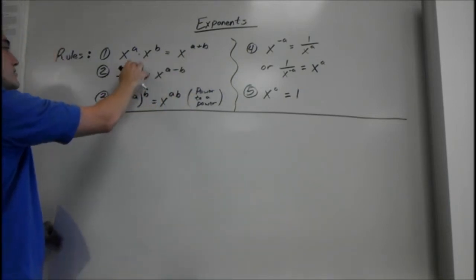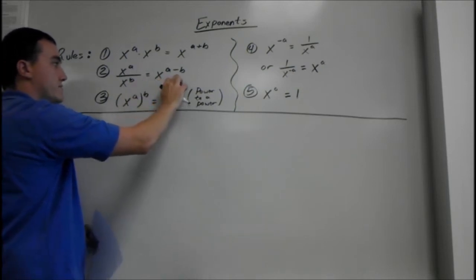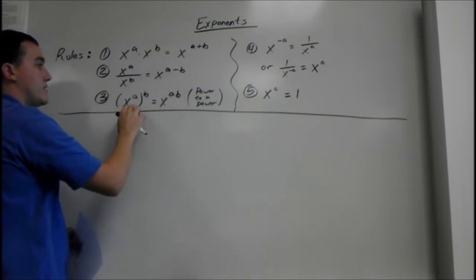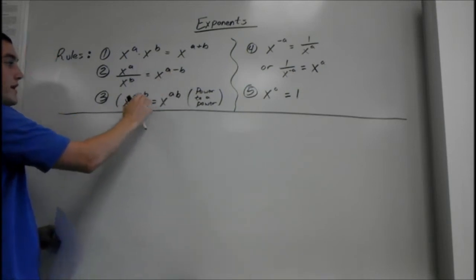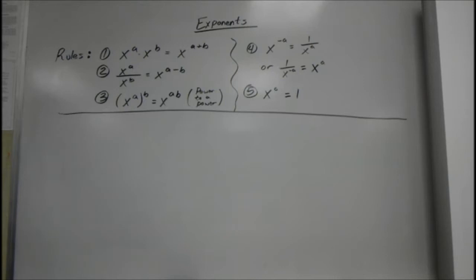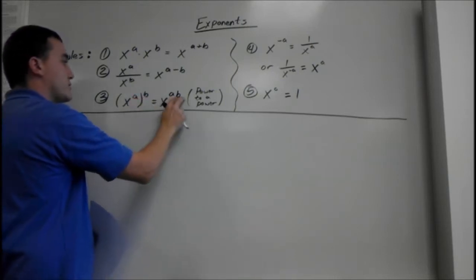If you are dividing terms with exponents, then subtract. If you have a power to a power, or an exponent to an exponent, you multiply them — so a times b.